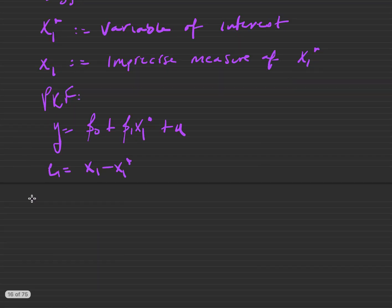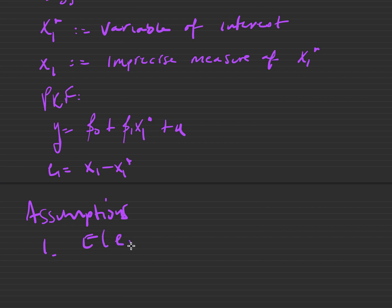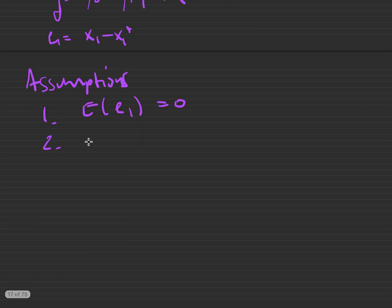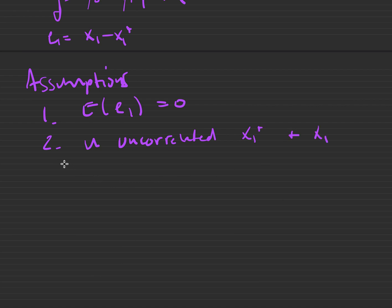Let's write down some assumptions to frame our analysis. First, we're going to assume that the expected value, the mean, of e1 is 0. And two, we're going to assume that u is uncorrelated with x1 star and x1, so that the expected value of y given x1 star and x1 is equal to the expected value of y given x1 star.